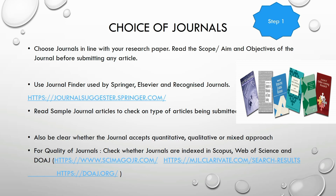Because you want to publish in high-quality journals, always check whether these journals are listed in important indexes such as Scopus Index, the Web of Science journal list, and the DOAJ for open access journals — links are provided here.